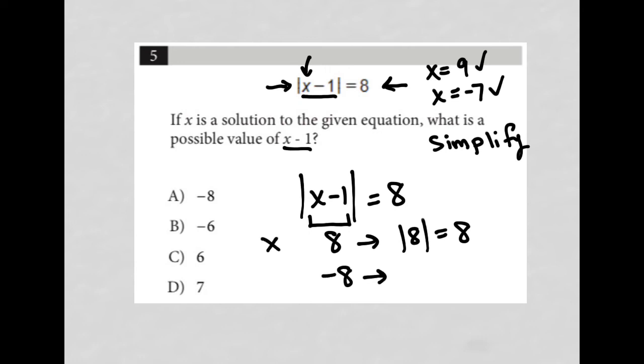So again, just so we're clear, if x minus 1 equals 8, we'd get this scenario. If x minus 1 equals negative 8, we'd get this scenario, where I'd have an absolute value of negative 8, which is also equal to positive 8.